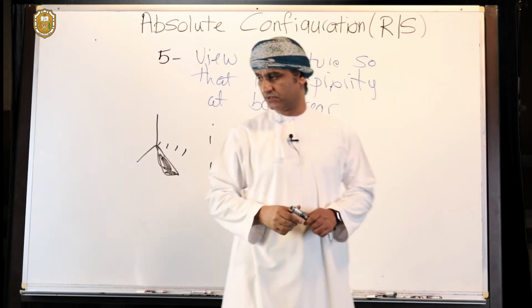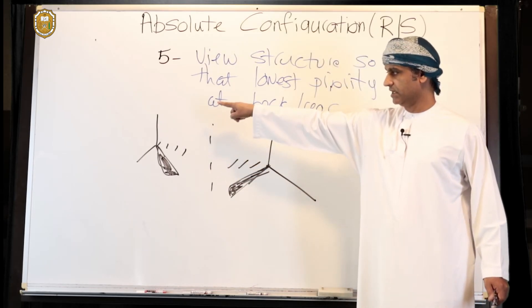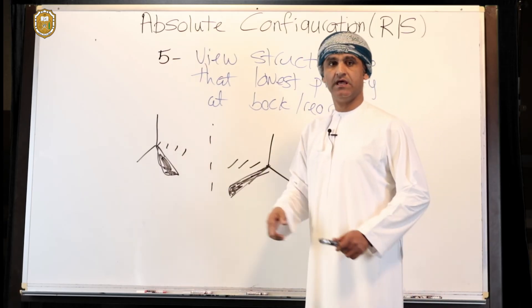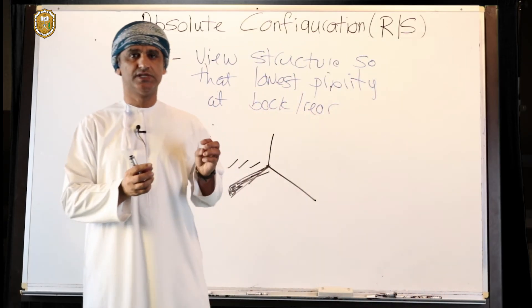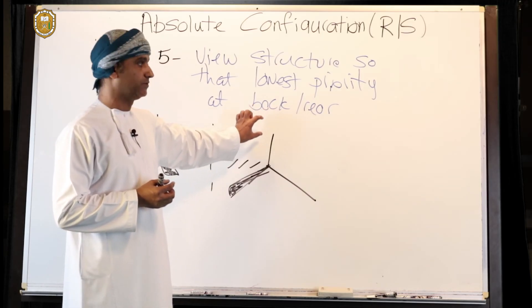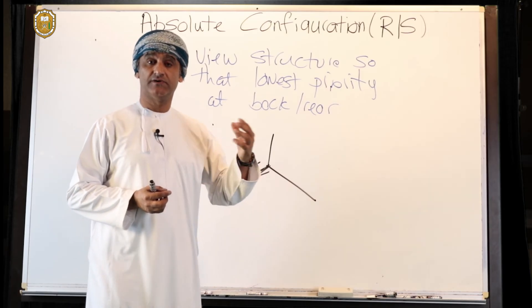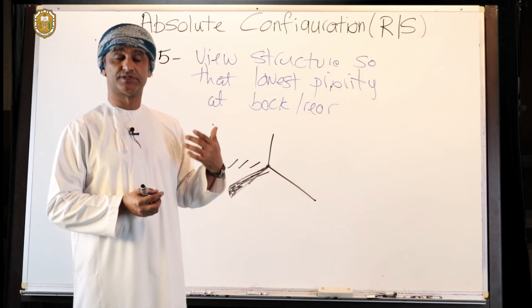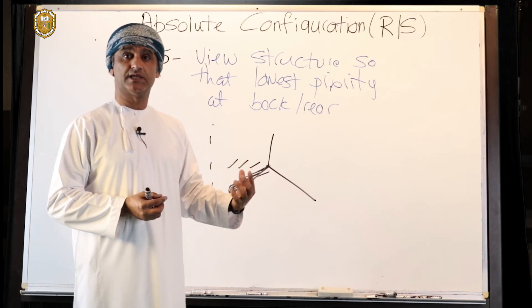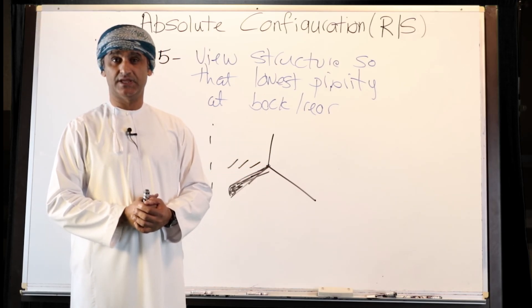So the lowest priority group, or group number four, can be here, here, there, or there. So the way they are treated is different. In other words, if group number four is here, where do we look at? Well, we need to look at the structure so that that group is away from us, so it's clear we need to look at it from the opposite side. We will take each of these cases separately coming up.